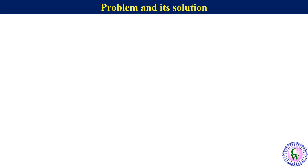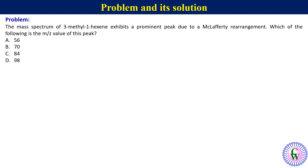Now let's have a problem and its solution. The problem is: the mass spectrum of 3-methyl-1-hexene exhibits a prominent peak due to McLafferty rearrangement. Which of the following is the m/z value of this peak? Options: 56, 70, 84, and 98.